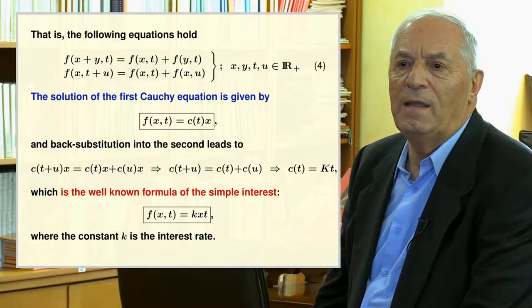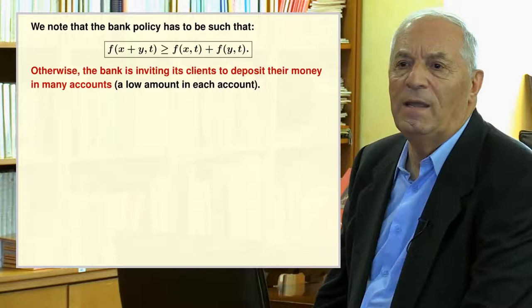The first equation is a family of Cauchy equations with index t. Its general solution is given in the transparency, where the constant c becomes a function of t, one for each t value. Replacing this solution into the second equation and removing the common x, we get another Cauchy equation with the indicated solution, which replaced back leads to the well-known simple interest formula: we receive an amount equal to the interest rate k times the deposit x times the time t.